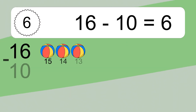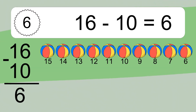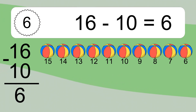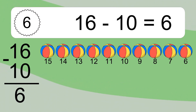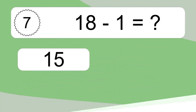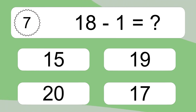16 minus 10 equals what? 16 minus 10 equals 6. Let's count it: 15, 14, 13, 12, 11, 10, 9, 8, 7, 6.